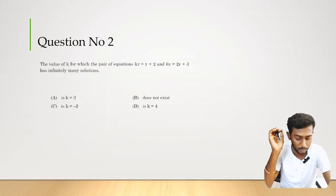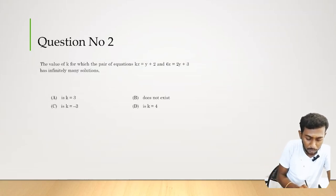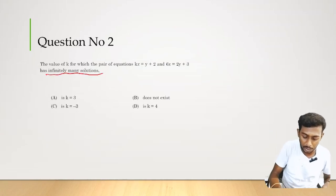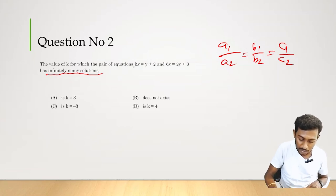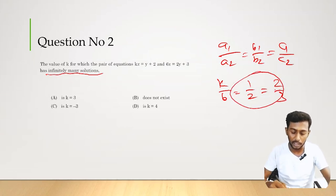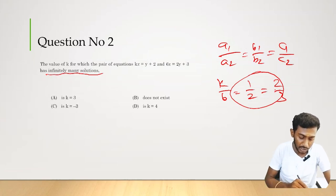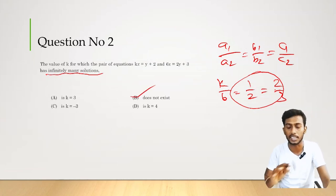Question number 2. The value of k for which the pair of equations kx = y + 2 and 6x = 2y + 3 has infinitely many solutions. The condition for infinitely many solutions is a1/a2 = b1/b2 = c1/c2. As per the question, k/6 = 1/2 = 2/3. But 1/2 is not equal to 2/3, so the data is contradicted. k value does not exist is the answer.